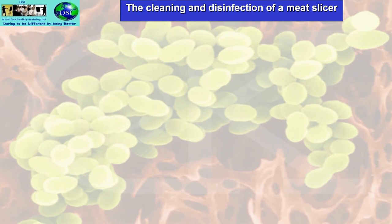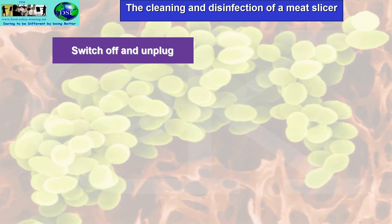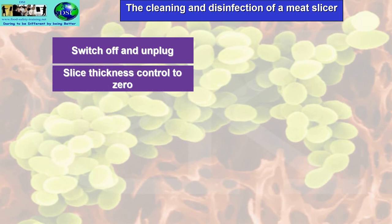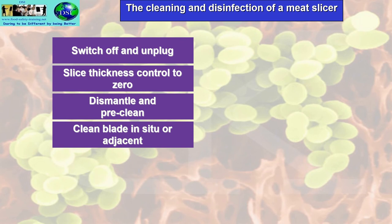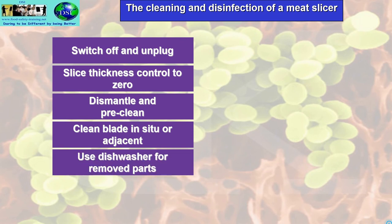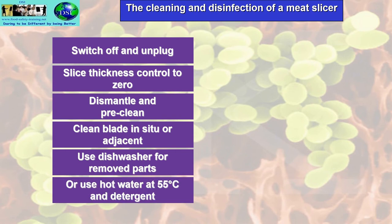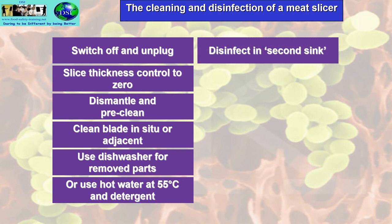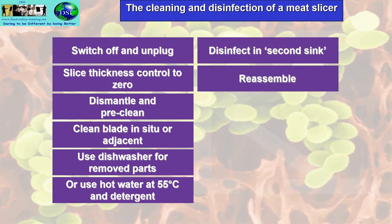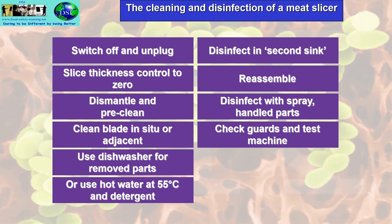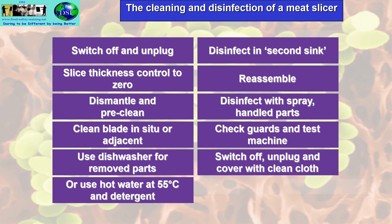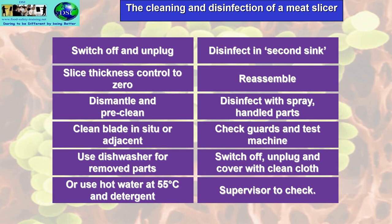Cleaning and disinfection of a meat slicer: switch off and unplug the machine, put the slice thickness control to zero, dismantle and pre-clean, clean the blade in situ or adjacent, use a dishwasher for removed parts or use hot water at 55 degrees C with a detergent, disinfect in a second sink, reassemble, disinfect with spray any handled parts, check guards and test machine, switch off, unplug, cover with a clean cloth, and ask the supervisor to check.